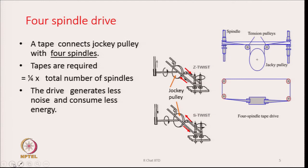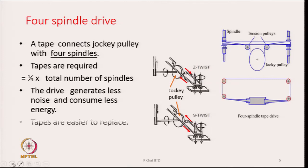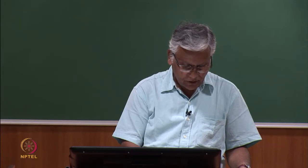The four-spindle tape drive generates less noise and consumes less energy. The tape wraps around each spindle at approximately 90 degrees, and the friction between tape and spindle verb is sufficient to drive the spindle. A key advantage is that tapes are easy to replace.